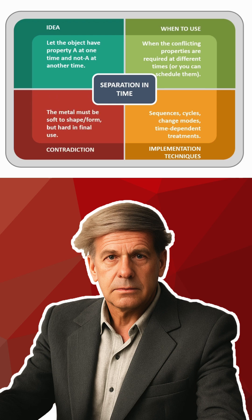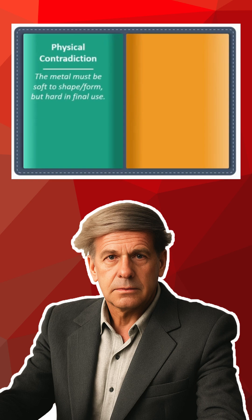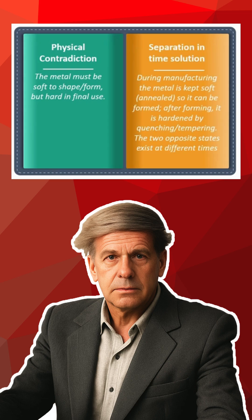The example contradiction is: the metal must be soft to shape or form, but the metal should also become hard in order to use it as a final product. As a physical contradiction: the metal must be soft to shape and form, but hard in final use. This is how the separation principle needs to be worked.